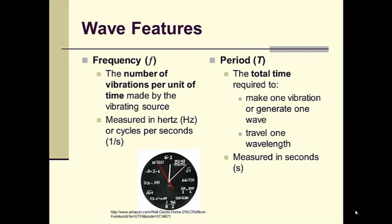Various features that we have of all waves are frequency and period. Frequency, the number of vibrations per unit of time. And that unit of time is typically seconds. So if we're measuring frequency of a wave or frequency of any occurrence, we want to know how often that occurrence occurs in a second. It's measured in Hertz and we can look at it as Hertz or in cycles per second, 1 over second. Period on the other hand is the total time required to make one wave, to generate one wave or have one complete cycle, or for a wave to travel one wavelength. And it is measured in seconds. So you can see there's a relationship between their units.